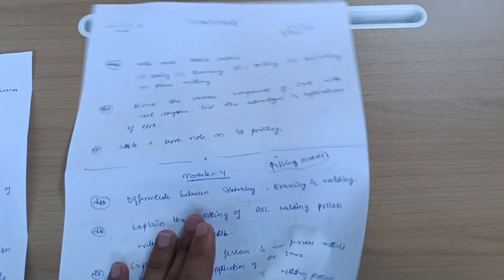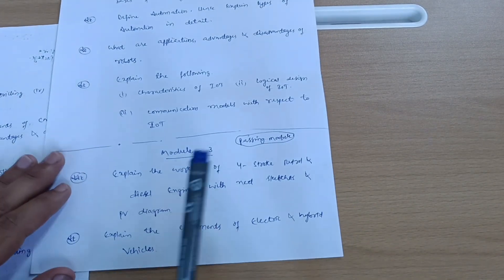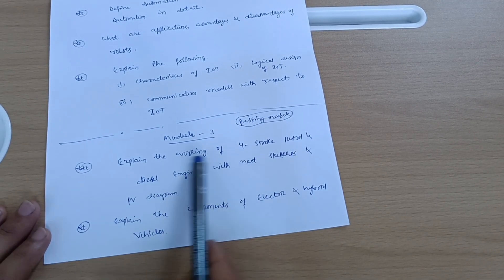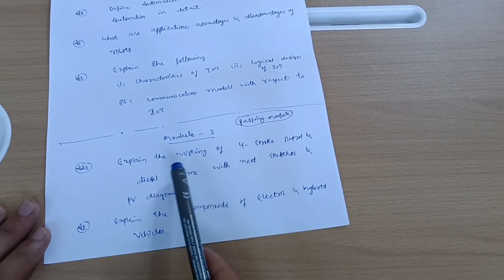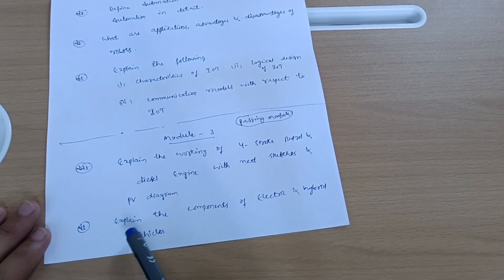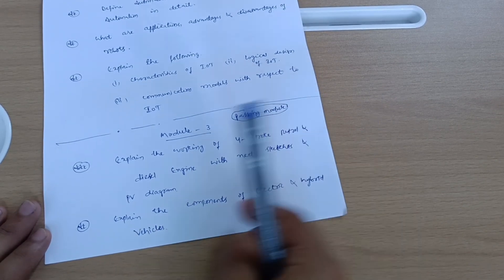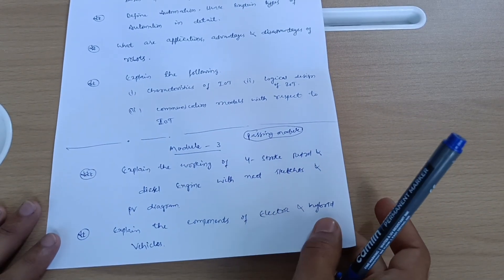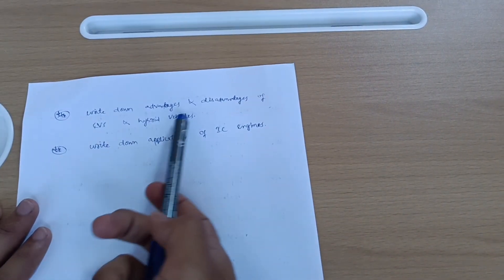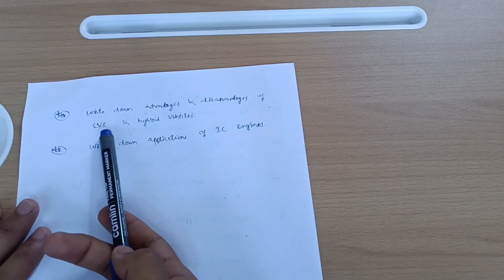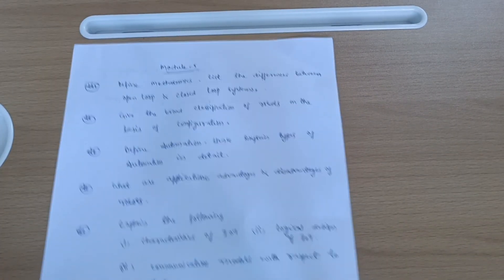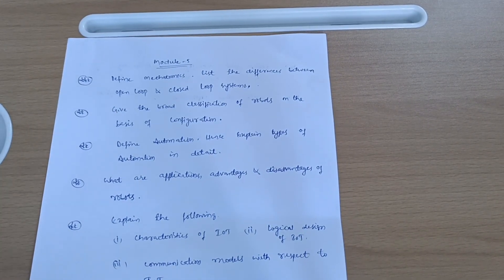Another last passing module is Module 3, in which you have to cover: explain the working of four stroke petrol and diesel engine with neat sketches and PV diagram. Sometimes they may ask the difference between four stroke and two stroke engine. Next, explain the components of electric and hybrid vehicles with neat diagram. Write down advantages and disadvantages of electric vehicles and hybrid vehicles, and write down applications of IC engines. This is all about Module 3.